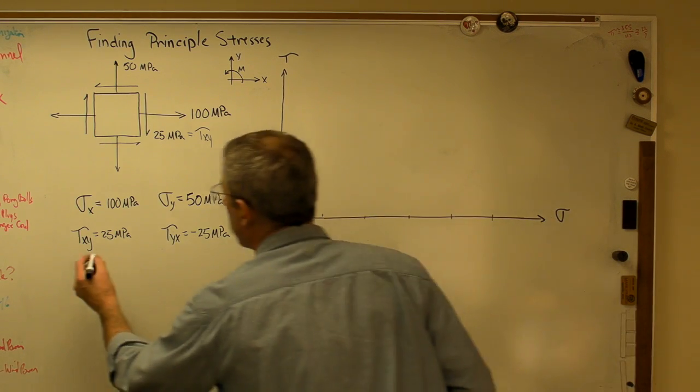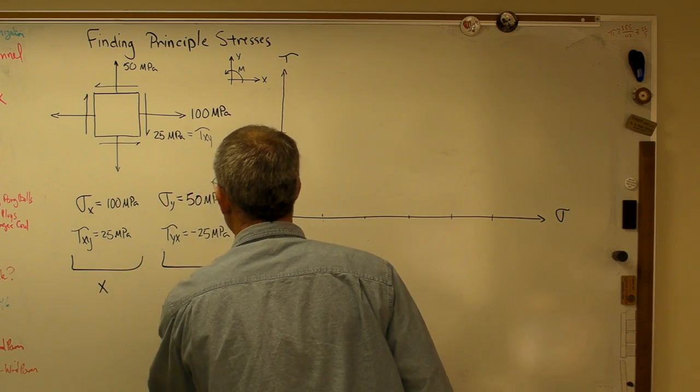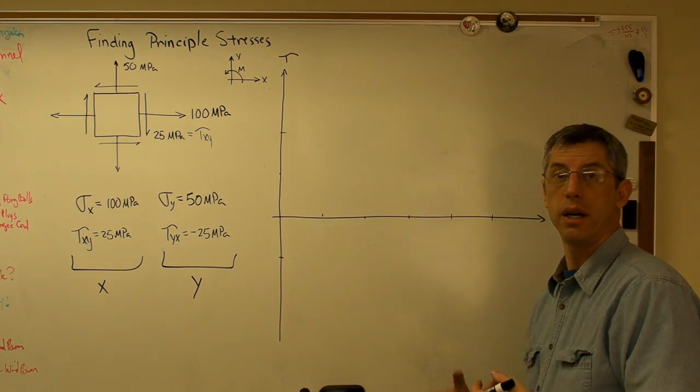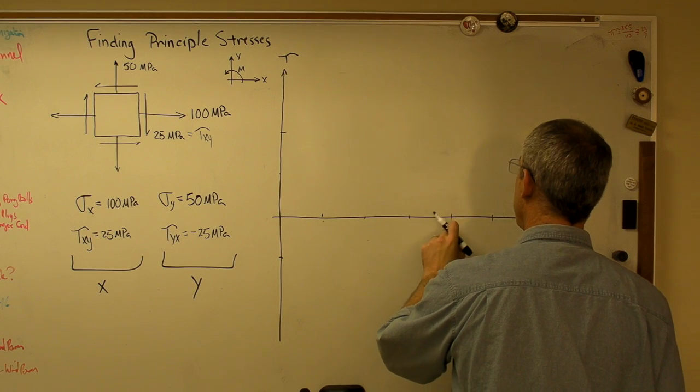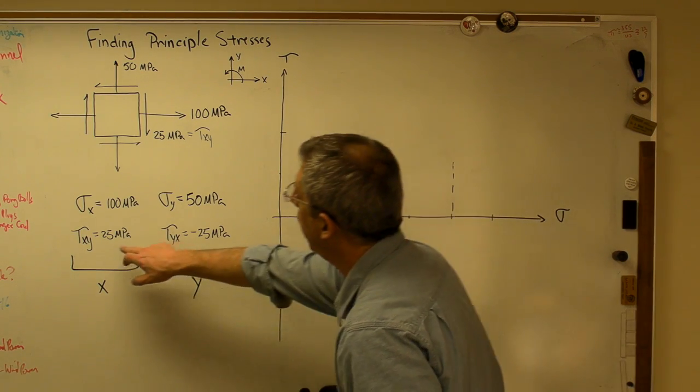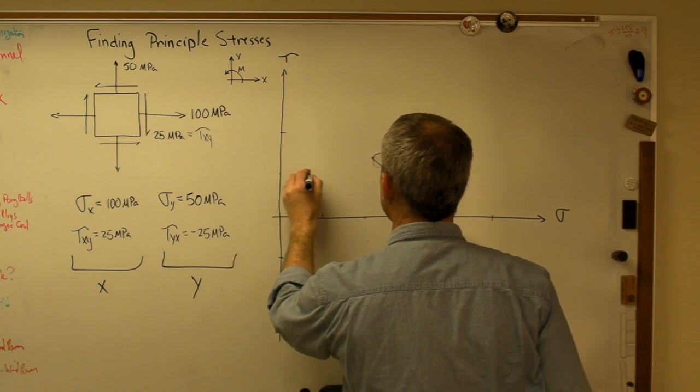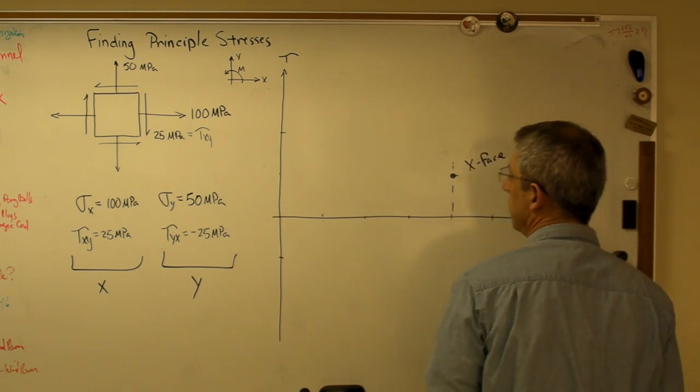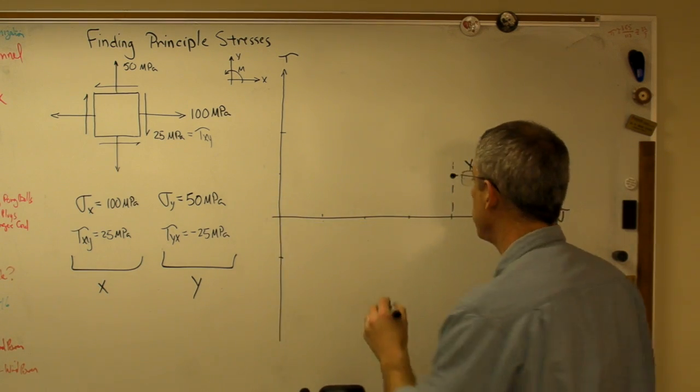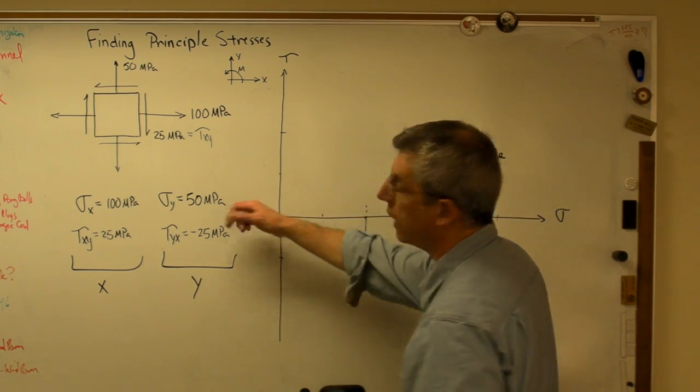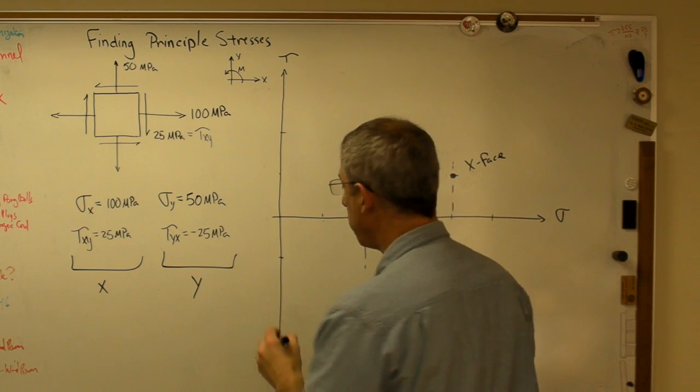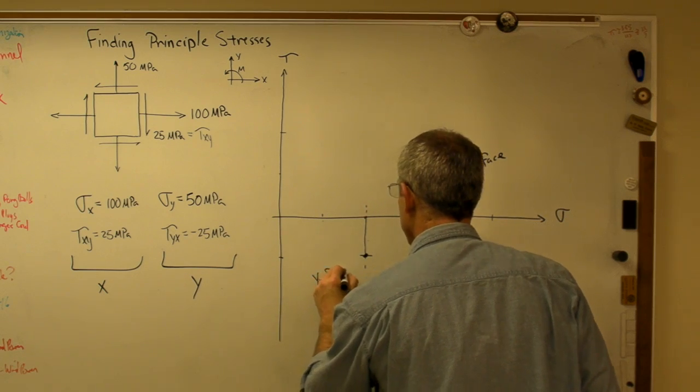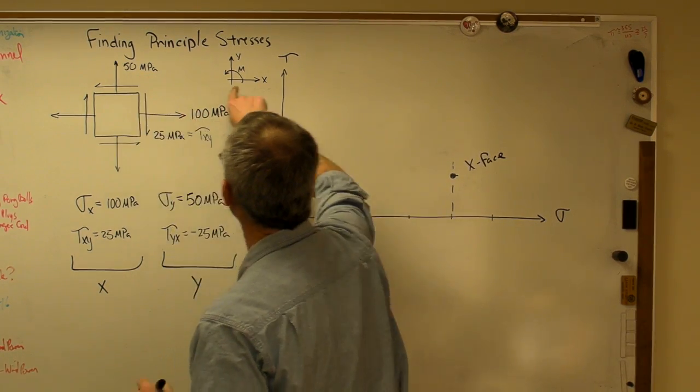So let's plot everything from the x-face and then everything from the y-face. X-face, we've got 100 megapascals in the normal stress direction. So that's 25, 50, 75, 100 right there and 25 megapascals in the shear stress direction. So that's data from the x-face. I'm going to do the same thing with the y-face. I'm going to go over 50 megapascals in the normal stress direction and then minus 25 in the shear stress direction. So there's data from the y-face. There's my coordinate system.